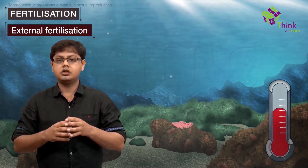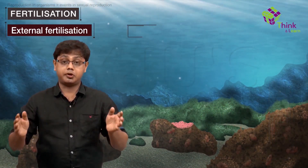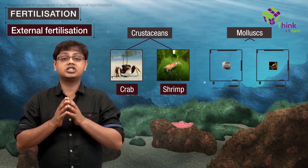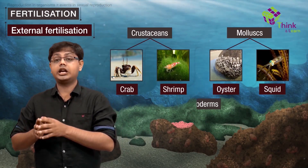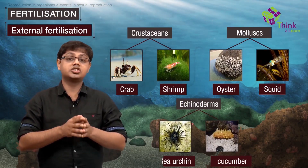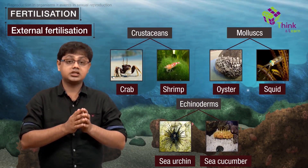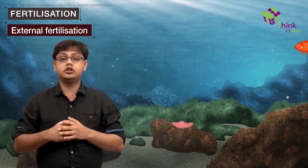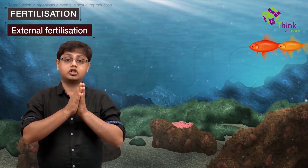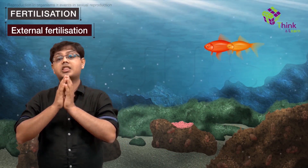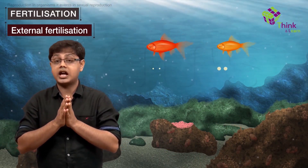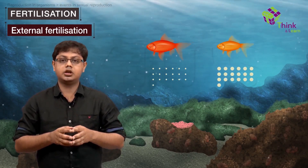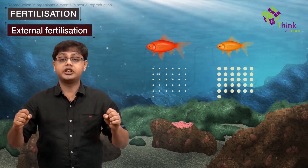Nearly all fish spawn, as do crustaceans such as crabs and shrimps, mollusks such as oysters and squid, and echinoderms such as sea urchins and sea cucumbers. These organisms show great synchrony in the release of male and female gametes into the medium. Not only the male gametes but the female gametes are also produced in large numbers in order to enhance the chances of fertilization, and as a result, a large number of offspring can be produced.